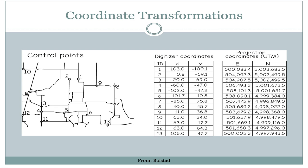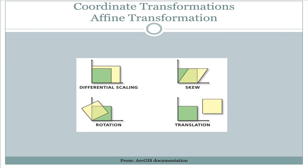Those points could be in digitizer coordinates as shown in the first table. What we want to do is get that data into a projected coordinate system, which in this case is UTM. The simplest way to do this is to use an affine transformation. With an affine transformation, lines that are parallel before the transformation will remain parallel after the transformation.